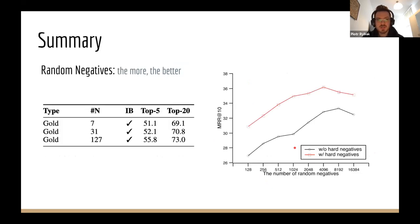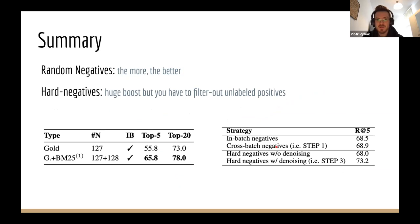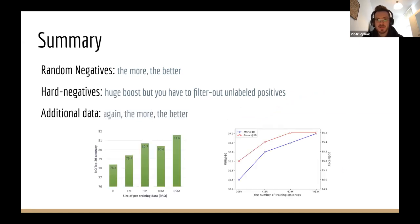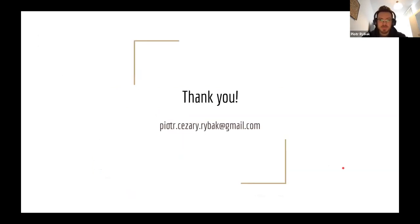A few lessons learned as recap: random negatives — the more the better, confirmed by both DPR and RocketQA. For hard negatives, you must use them for a huge boost, but you need a way to filter out unlabeled positives. And again, more data is better. If you can find additional data for pre-training — whether synthetic pairs, pseudo-labels, or weakly labeled data — it is usually wise to use it as it consistently helps. Thank you for listening, and I'm happy to take questions.